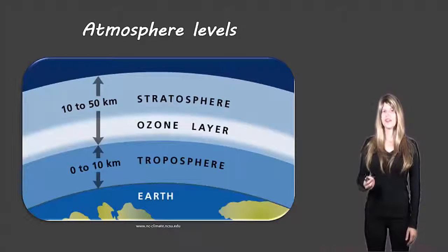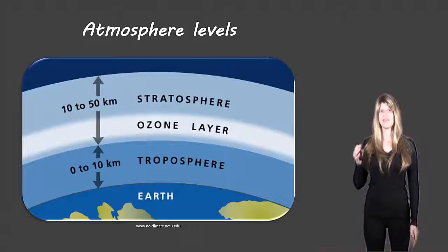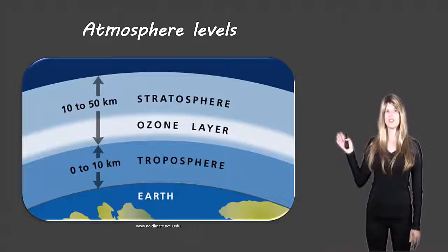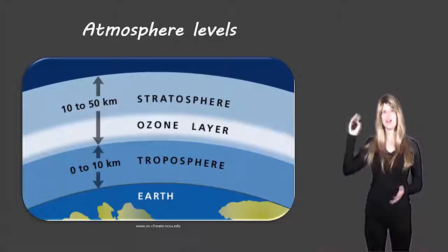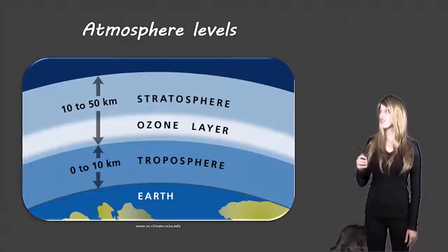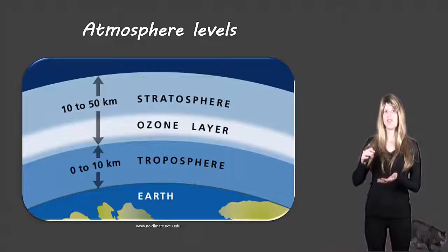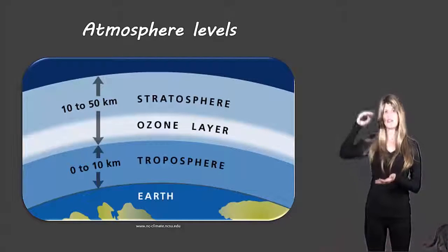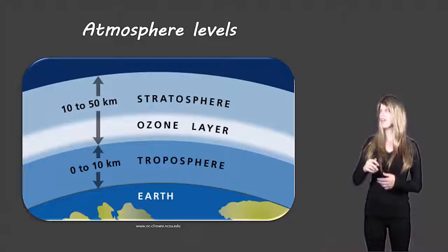First of all, there are several different layers of the atmosphere. This just shows the two that we're going to be looking at today, but there are many other levels. The troposphere is closer down to the earth between 0 and 10 kilometers above the earth.